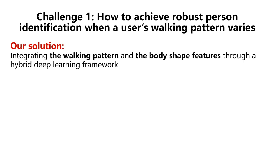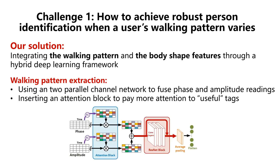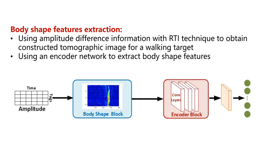Our key solution is integrating walking pattern and body shape features to identify a dynamic user. To extract the walking pattern, we design a two-path channel network to fuse phase and amplitude readings. In particular, we design an attention block to let the model focus more attention on those tags whose readings are more sensitive to users' walking. To obtain body shape features, we first use amplitude difference information with our tomographic imaging technique to obtain a constructed tomographic image for a walking target. Then we utilize an encoder network to extract body shape features.